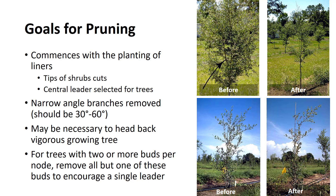The tips of spreading evergreens and some shrubs are frequently cut back with an elevated lawnmower to induce full branching and compact growth. Trees that normally grow with a central leader should have multiple leaders removed to leave the tallest, straightest one.